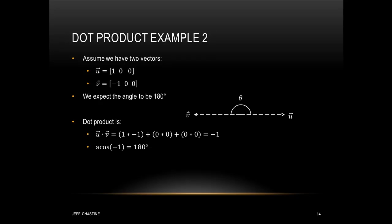As a second example, let u = (1, 0, 0) and v = (-1, 0, 0). We should expect the angle to be 180 degrees. Computing component-wise: 1×(-1) + 0×0 + 0×0 = -1. This -1 doesn't represent the angle — it's the cosine of the angle. Taking the arc cosine of -1 gives us 180 degrees.